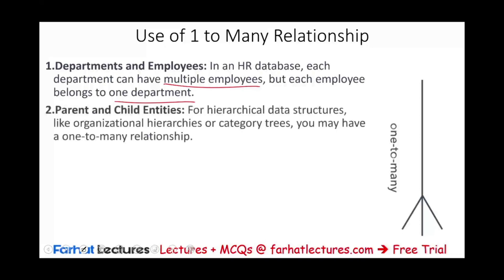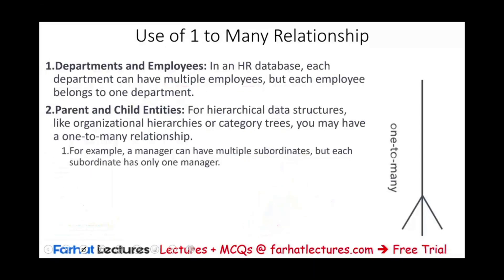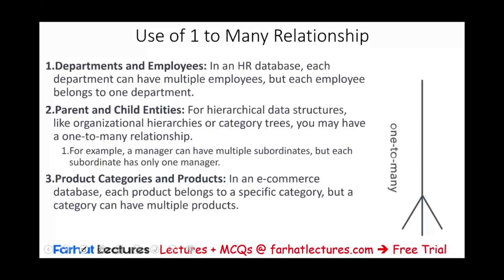Parent and child entities appear in hierarchical data structures like organizational hierarchies or category trees. For example, a manager could have multiple subordinates, but each subordinate would only have one manager. This is again a one-to-many relationship.